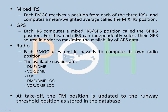Next is radio. Each FMGC uses onsite navaids to compute its own radio position, based on DMEs, VORs, localizer DMEs, and NDBs. Available navaid combinations are DME-DME and VOR-DME. DME-DME gives good accuracy because you have two distance measuring equipment sources, though not as accurate as mixed IRS or GPS — but good enough as a standby. At takeoff, the FM position is automatically updated to the runway threshold position as stored in the database the moment you set the thrust levers to the takeoff thrust setting.